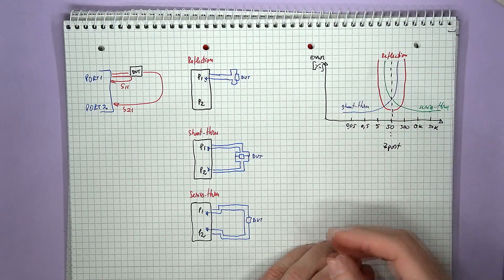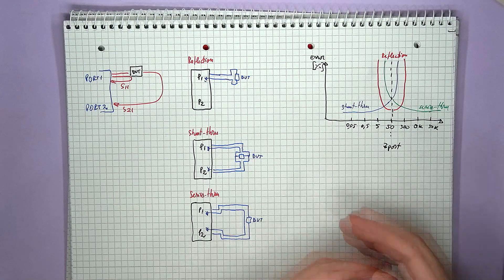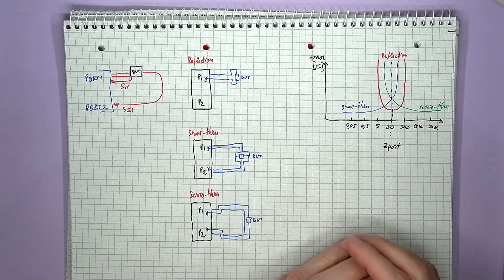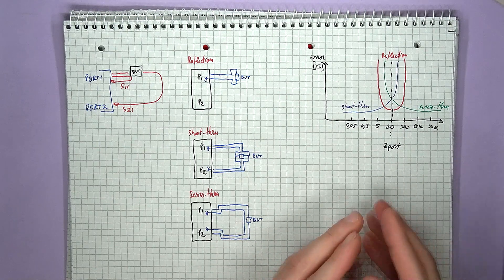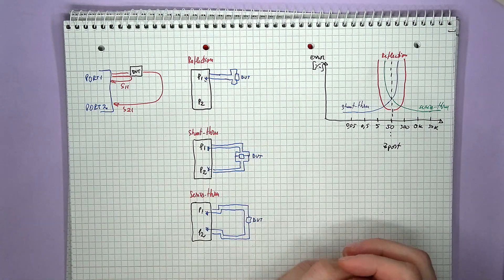So if you want to measure your antenna, or a transmission line, or an amplifier port, all of which should be in this sort of range, then the single port reflection method is the best.